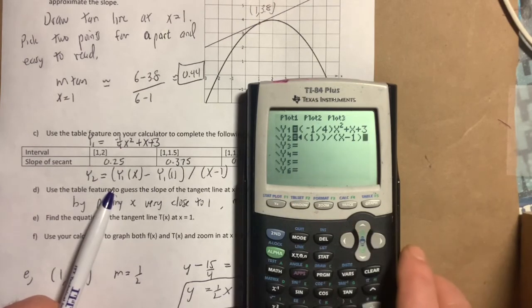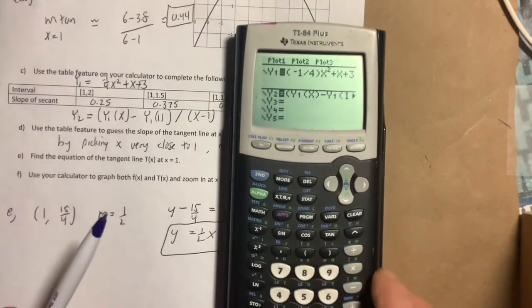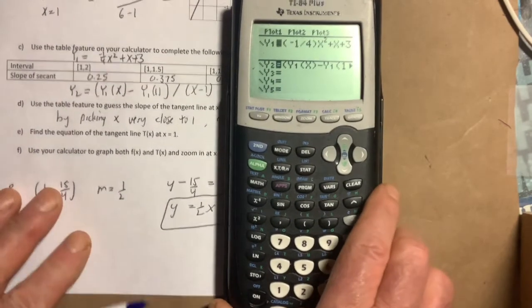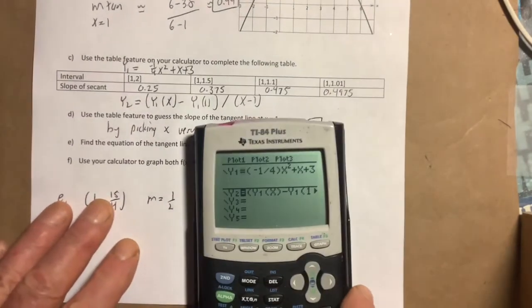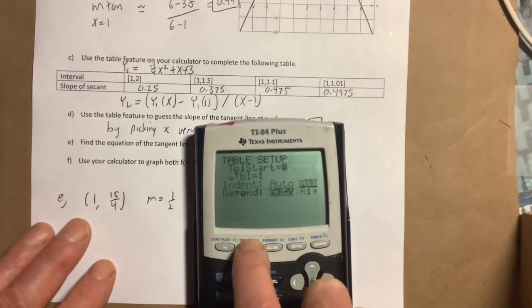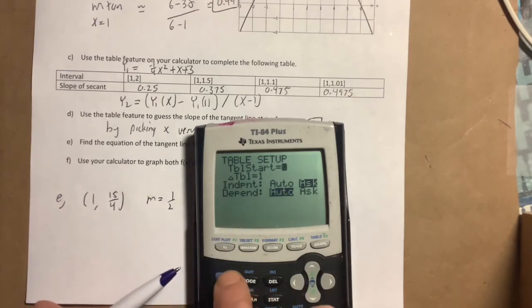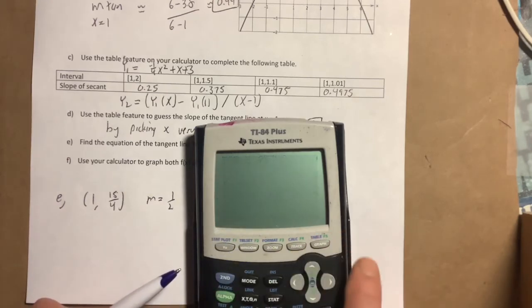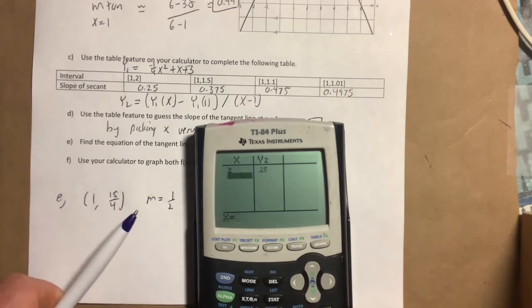So there's the expression. Now I don't really want to have y1 involved in my table, so I'm going to disengage it. Remember how to do that—you don't have to do this, but I'm going to hit the enter button that way it won't appear. I'm just going to pick these values here. Before you hit table, make sure that it's on ASK here. Hit second, table setup, make sure it's on ASK—it looks like it still is. Now hit second table and there's a table. We could delete some of this stuff if you want. I want the slope of the secant line from 1 to 2, so hit 2 here: 0.25. Okay, that looks good.